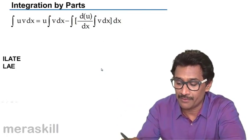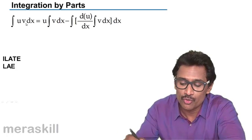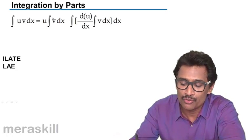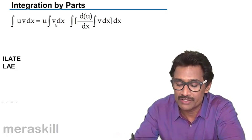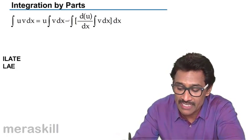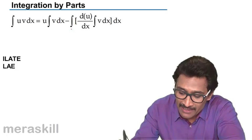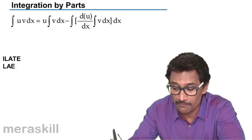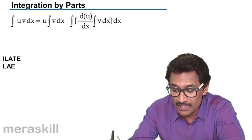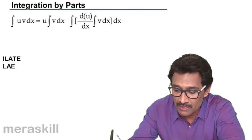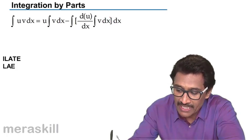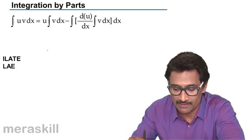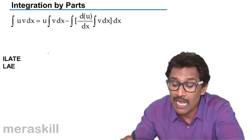So ∫u·v dx is nothing but u times the integral of v dx, minus the integral of the differential of u times the integral of v dx, and the integral of that product.